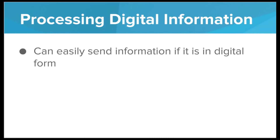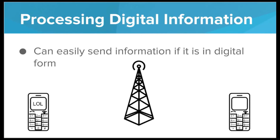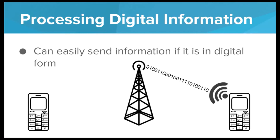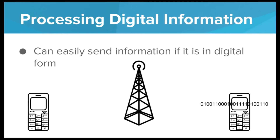Lastly, we can easily send information if it's in digital form. If I'm on my cell phone and I want to type 'LOL' to a friend, it's very easy for computers to break down that sentence into binary data, and then the hardware of my phone can spit out that binary data as a burst of radio waves — perhaps long waves for a one and short waves for a zero. Those waves are picked up by a cell tower, repeated across to more cell towers, and finally it gets to my friend's phone, receives the binary message, and is able to use the same process to re-encode it back into text.